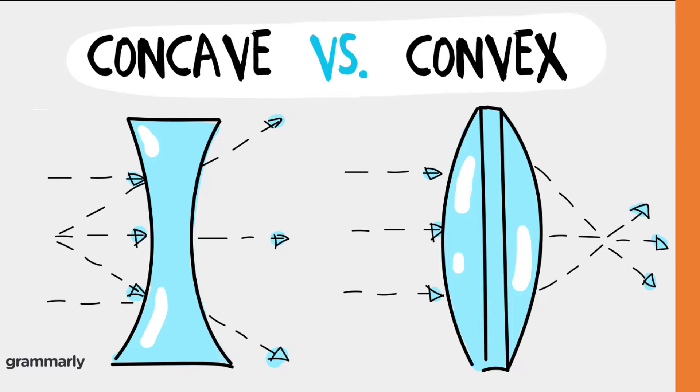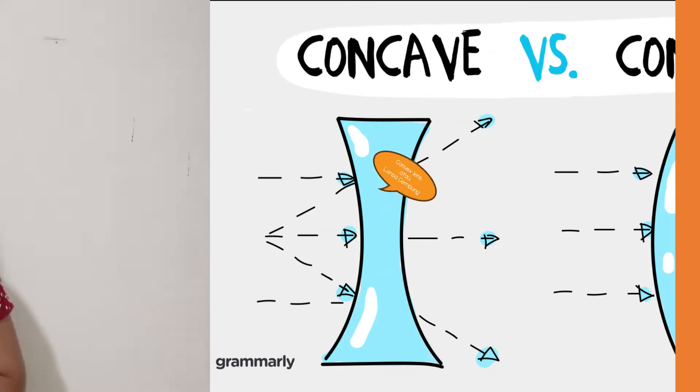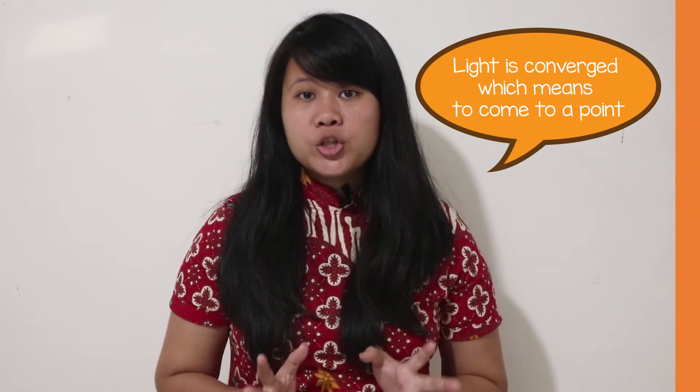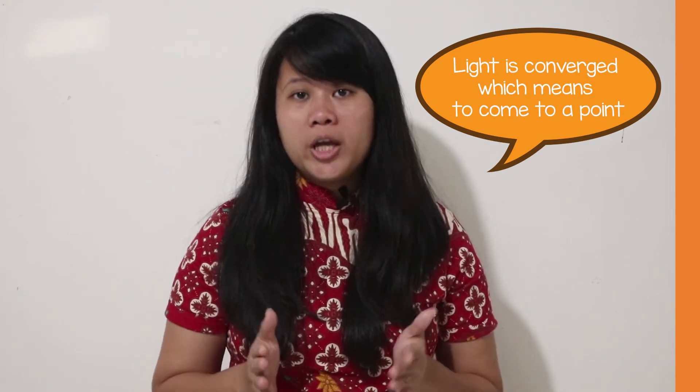Sedangkan di gambar yang sebelahnya ada yang namanya convex lens atau lensa cembung. Convex lens, because it's thick in the middle or curves out. Light is converged, which means to come to a point. Jadi, cahaya menembus dan dikumpulkan menuju satu titik pusat atau titik fokus. Ini hanya akan terjadi pada lensa cembung, seperti contohnya kaca pembesar. Kaca pembesar adalah salah satu benda transparan yang juga memiliki lensa cembung.